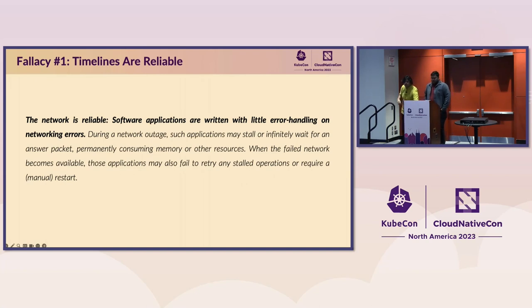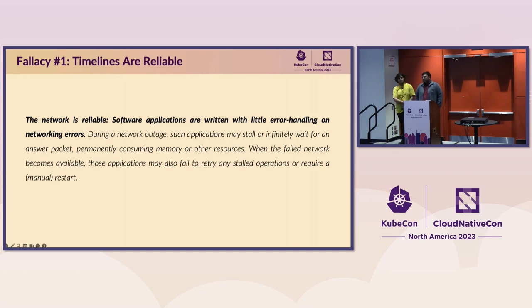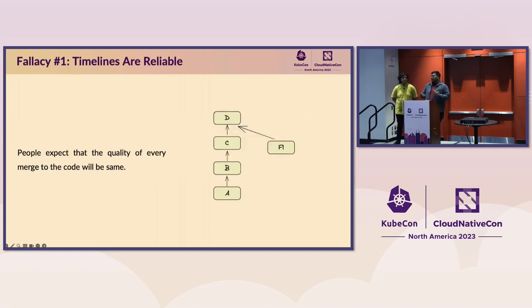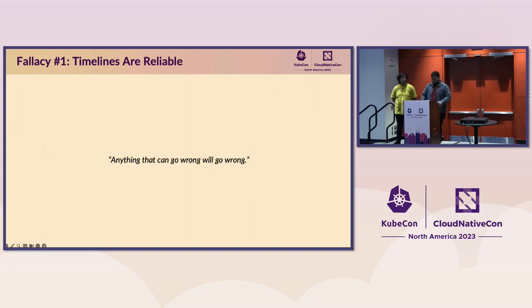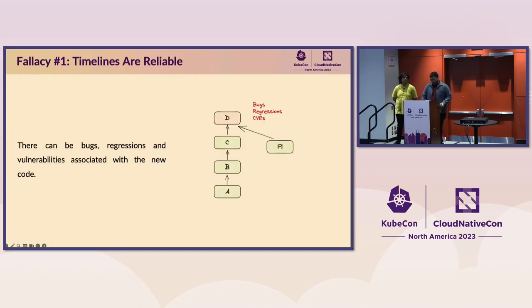The first one is: the network is reliable. Software applications are often written with very little error handling to tackle networking errors, resulting in applications stalling or waiting for a response. The solution is to retry and have mechanisms for retrying without causing undue bandwidth issues. Now, correlating that to cloud-native communities — take a massively distributed code base. People might expect that the quality of every merge to the code will be the same. However, that's not the case. With every merge, there can be issues. Anything that can go wrong will go wrong — Murphy's Law. There can be bugs, regressions, and CVEs introduced into any commit.